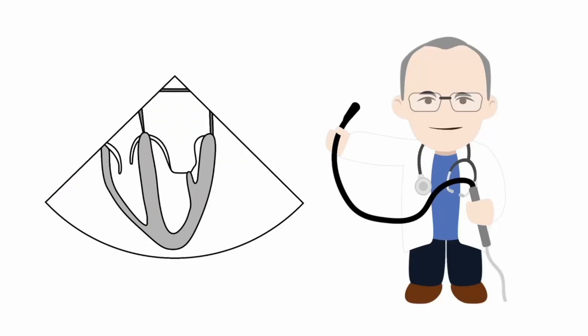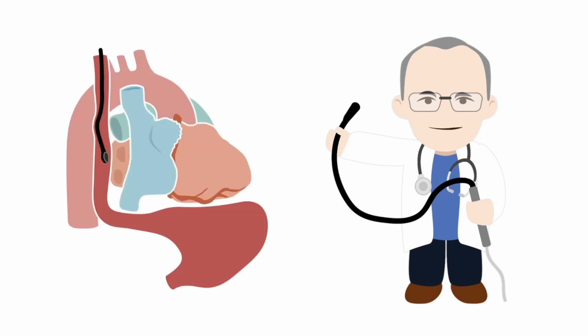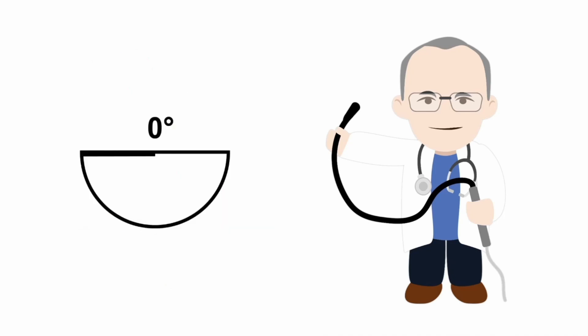In this lesson we're going to learn how to locate and assess the left-sided pulmonary veins, and let's begin with the left upper pulmonary vein. To find this vessel, let's begin with the four-chamber view. This view is found with a TEE probe in the mid-esophageal position, and I'd suggest starting with a transducer imaging plane angle of zero degrees.